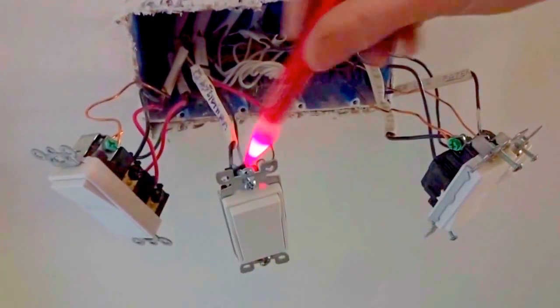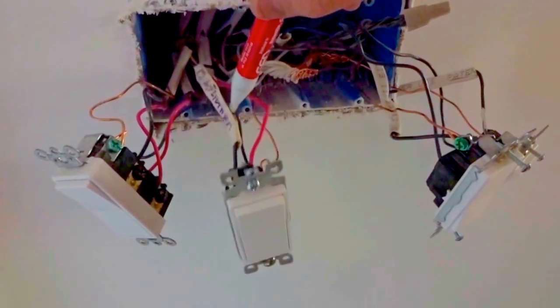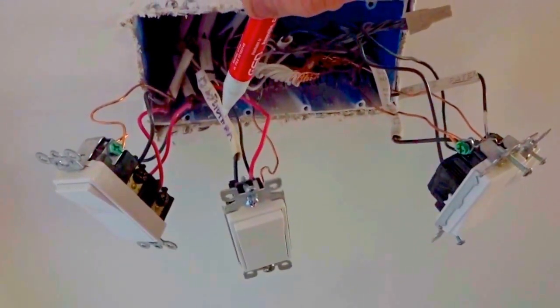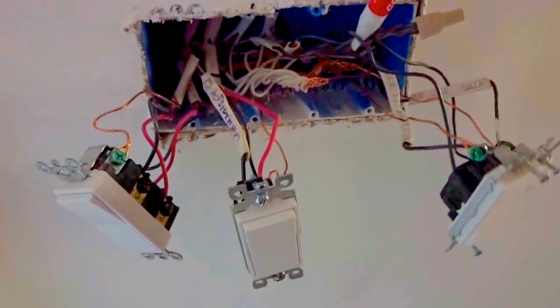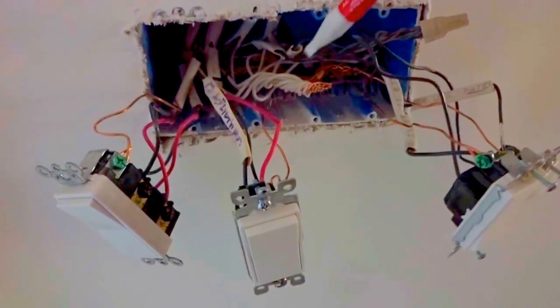This three-way switch with the switch leg and the travelers will also have the neutral isolated from the other two circuits, and then on down to this one. So instead of all the neutrals being under one wire nut, there's going to be three separate wire nuts for the neutrals.